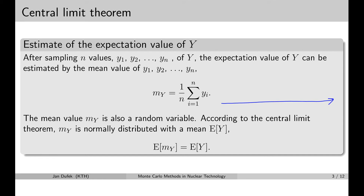Let's say we calculate the distance fission neutrons fly to the first collision. You run a Monte Carlo simulation during which you sample this distance one million times and calculate the mean value using all one million samples. You calculate that the distance is, for instance, 10 centimeters — that is the mean value of the distance.